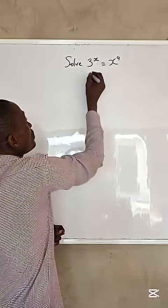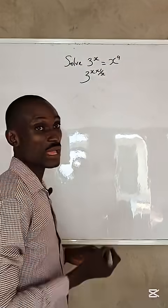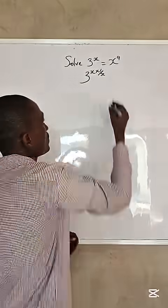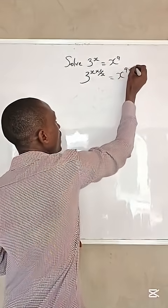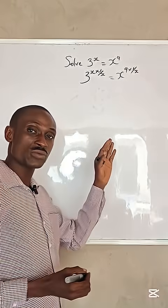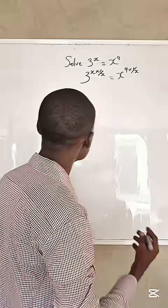The first thing is to divide. 3 raised to the power of x, multiply by 1 over x equals x raised to the power of 9 also multiplied by 1 over x. Because anything you do to the right-hand equation, you have to do likewise to the left-hand equation.